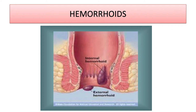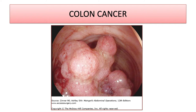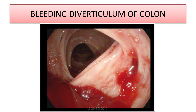On rectal exam, do not expect to feel internal hemorrhoids — they are soft and usually cannot be palpated. This is an example of colon cancer, usually a polypoid mass that may occupy most of the lumen. This is an example of a diverticular bleed — you can see significant amounts of blood coming from the diverticulum.